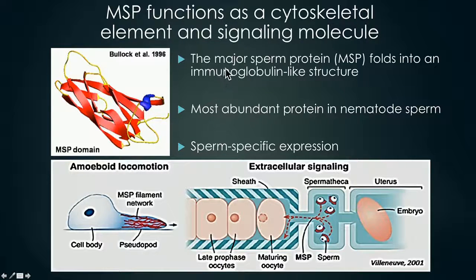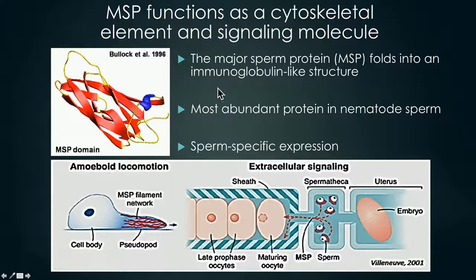Today I want to tell you a little bit about our favorite protein. It's called the major sperm protein, which we abbreviate as MSP. MSP folds into an immunoglobulin-like structure as seen here on the left. It is the most abundant protein in nematode sperm and it is specifically expressed in sperm. MSP forms a filament network in sperm and this filament network aids in sperm locomotion.